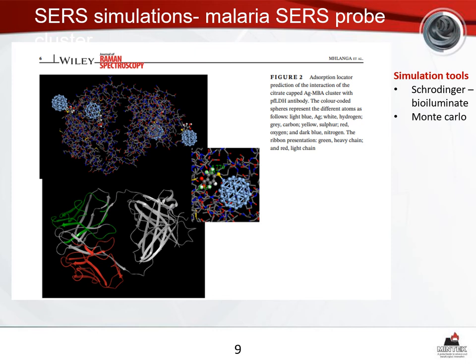Since the whole platform uses biological molecules, we also used NAMD and Monte Carlo to introduce a biological molecule — we downloaded a Plasmodium falciparum antibody from the Protein Data Bank — and studied its interaction with the clusters conjugated to the tag. We were able to deduce that it is actually a physisorption reaction, based on the distance between the two entities.